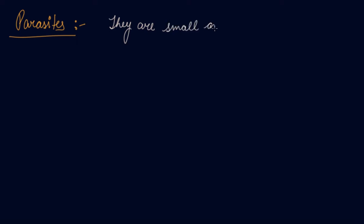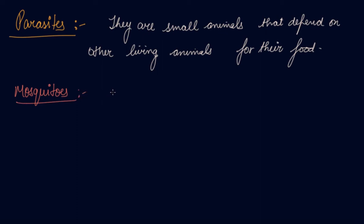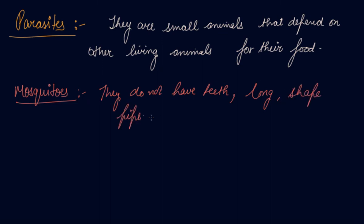Parasites are small animals that depend on other living animals for their food. If I talk about mosquitoes, they do not have teeth. Mosquitoes actually suck the blood. Instead of teeth they have a long, sharp pipe to pierce the skin and suck the blood.